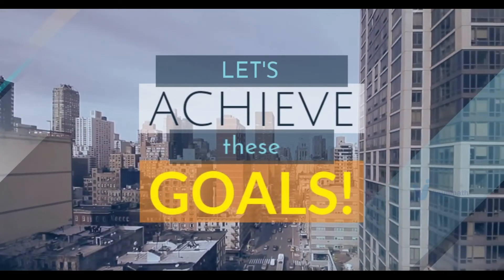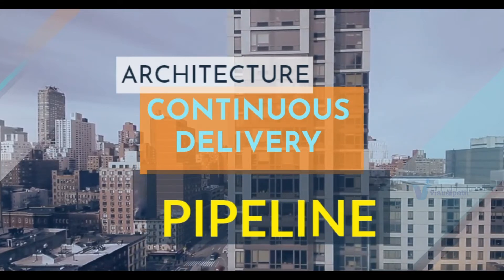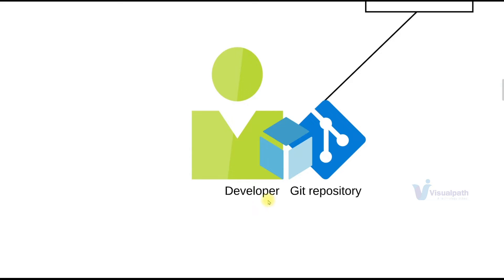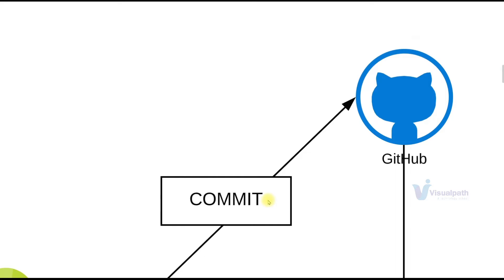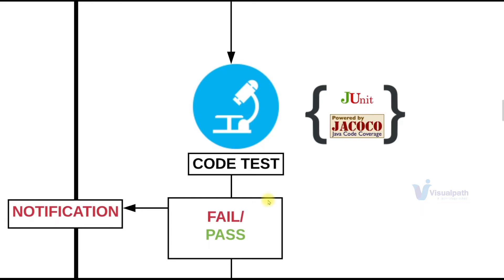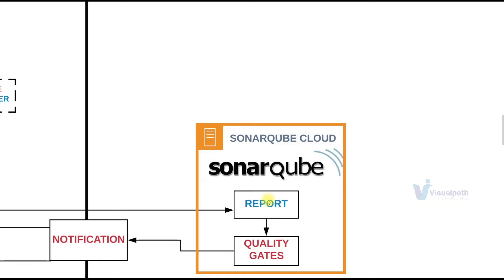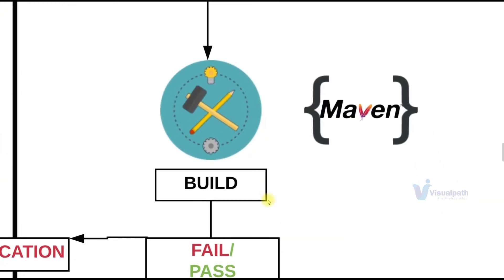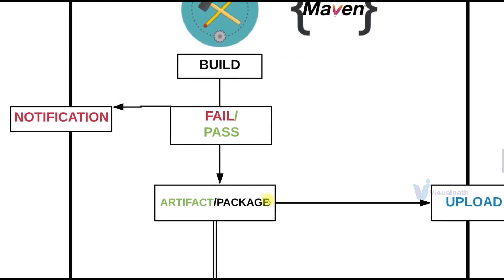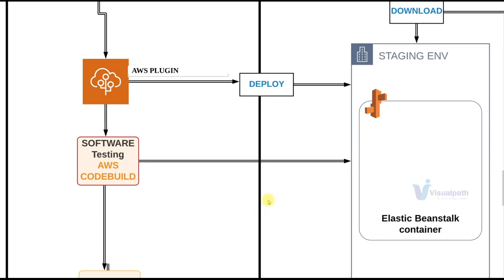Let's look at the architecture of the continuous delivery pipeline. Once the project is set up, the flow will be: a developer makes a code change and pushes it to GitHub. Jenkins detects the change, fetches it, and runs unit tests locally. If that passes, it moves to the next level where we do code analysis using CheckStyle and SonarScanner, and the report is pushed to SonarCloud — not a SonarQube server. Based on quality gates, if it's a success, we build the artifact. All dependencies are downloaded from the internet; we are not using Nexus here.